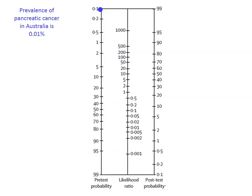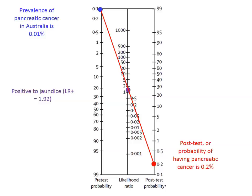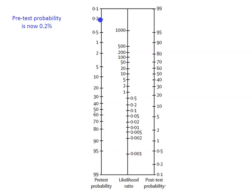Let's take the example of pancreatic cancer. In Australia it's a very rare disease — 0.01% prevalence — so we've plotted that with the blue line. Our first test is seeing whether or not the patient is jaundiced. We've plotted the positive likelihood ratio of 1.92, drawn a straight line, and our post-test probability jumps from 0.01 to 0.2%. Our pre-test probability has now jumped up to 0.2% because the patient has already tested positive to our first test.